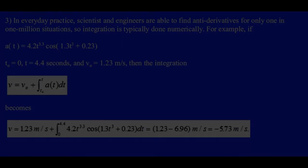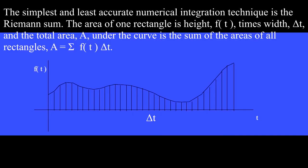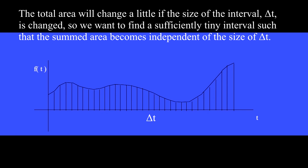The simplest and least accurate numerical integration technique is the Riemann sum. The area of one rectangle is height f(t) times width delta t, and the total area a under the curve is the sum of the area of all rectangles, a equals sum of f(t) times delta t. The total area will change a little if the size of the interval delta t is changed, so we want to find a sufficiently tiny interval such that the summed area becomes independent of the size of delta t.